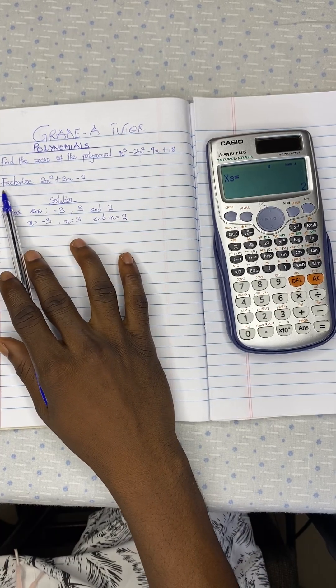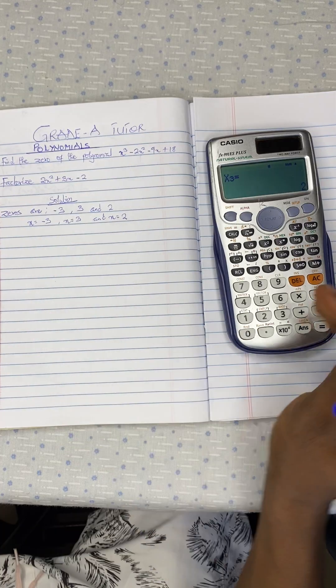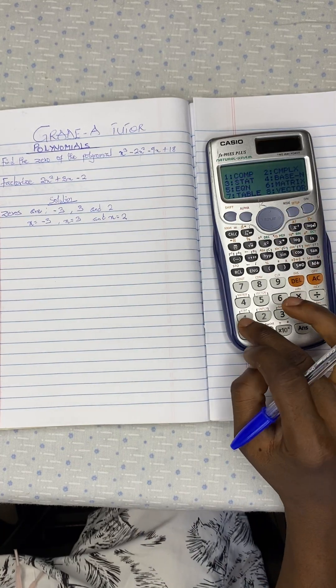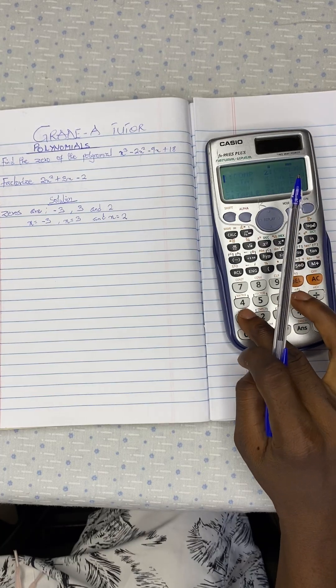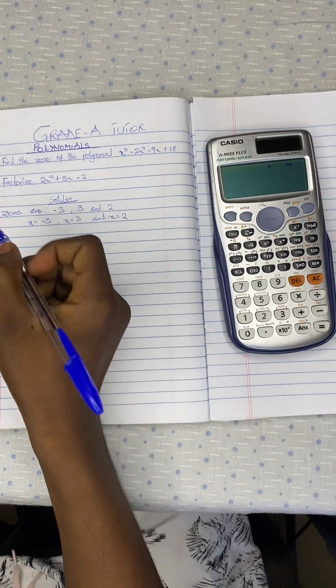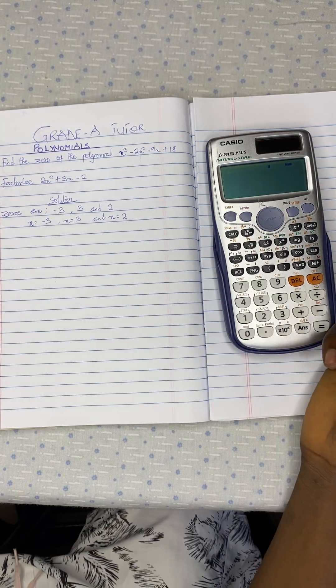So let's move on to the second question, which says factorize 2x squared plus 3x minus 2. So we reset our function to default. That is question number 2.